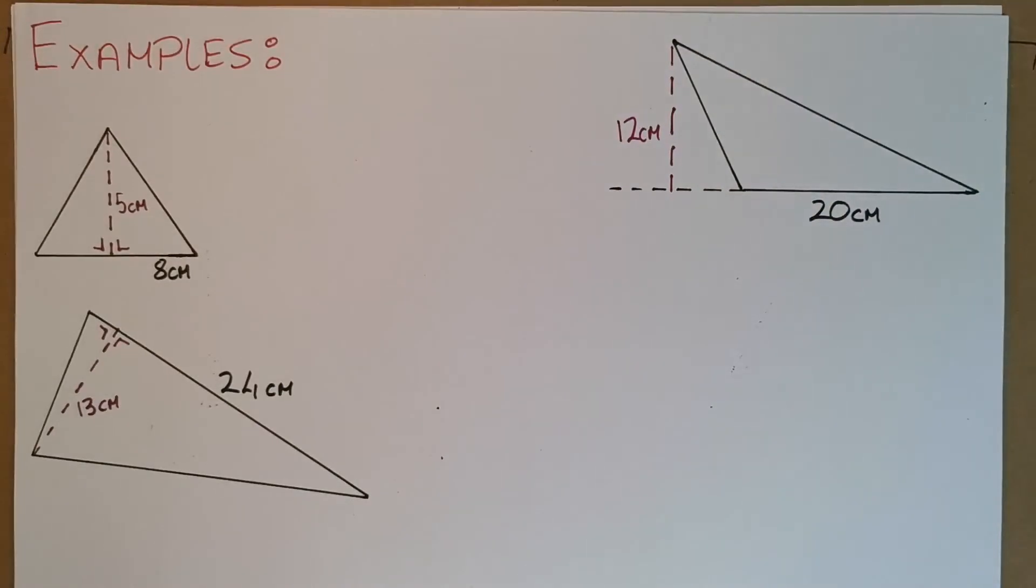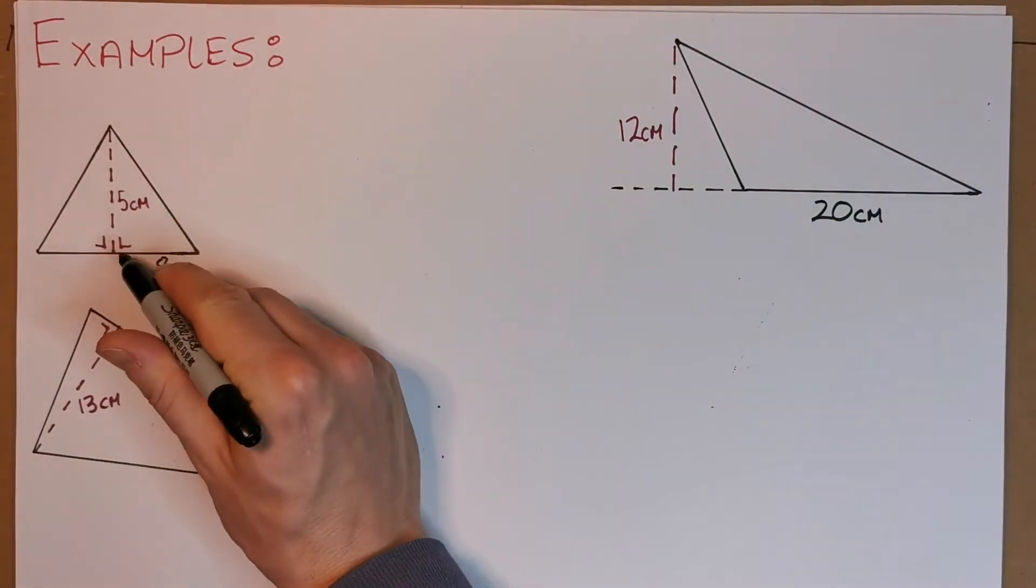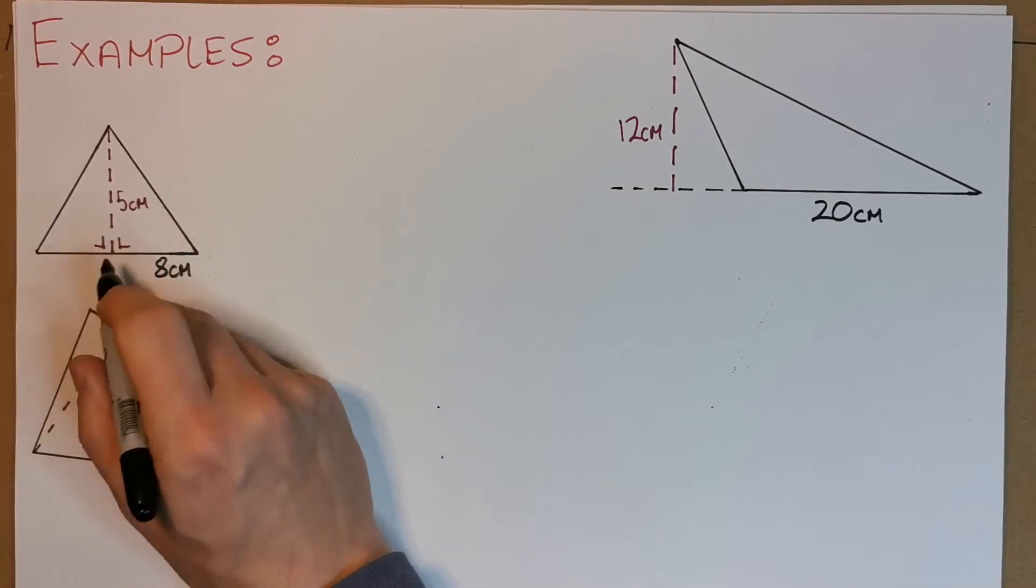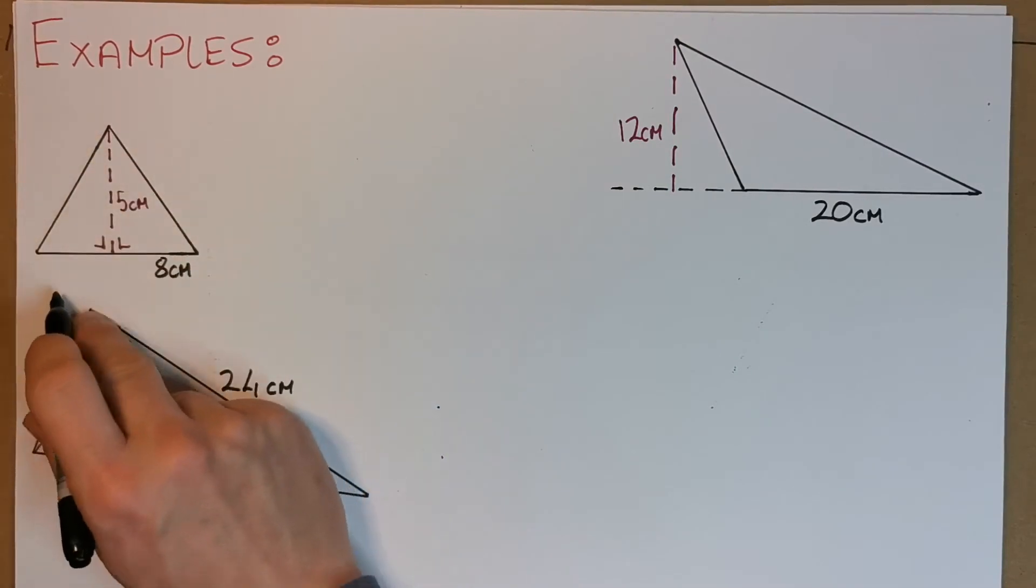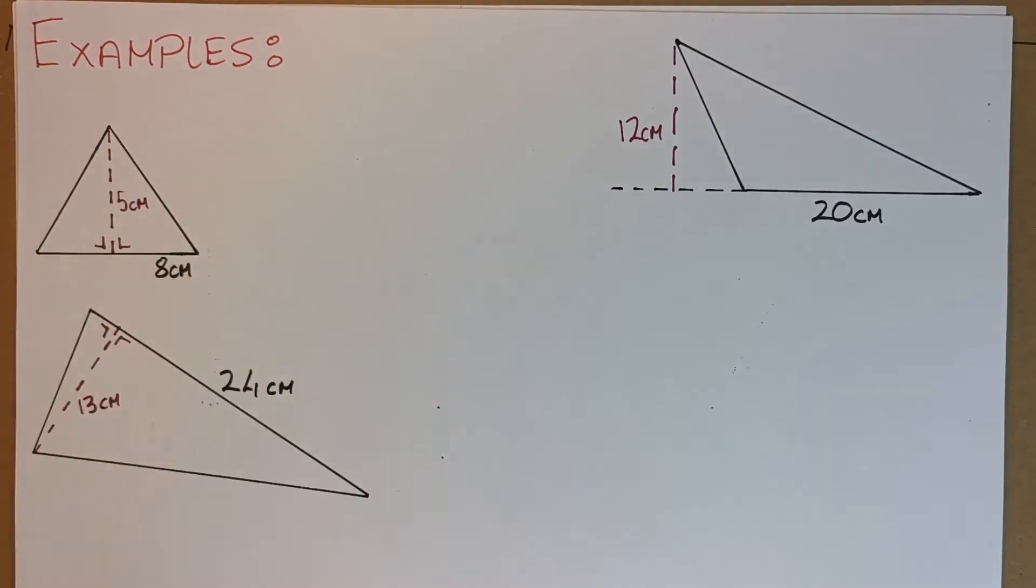Now I'm going to do three examples here. The first one is very straightforward. We have our perpendicular height line here—we can see it's a height of five centimeters, and the base is eight centimeters.